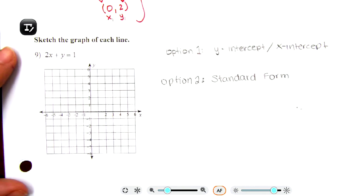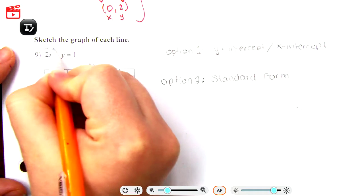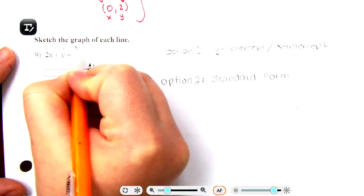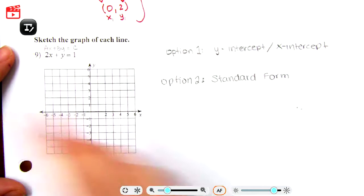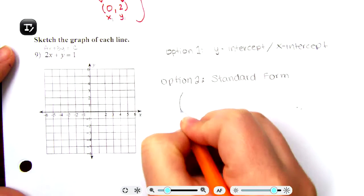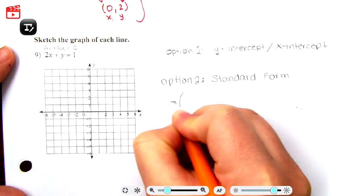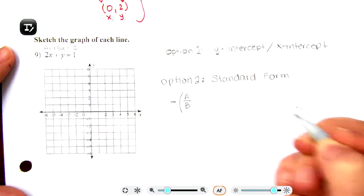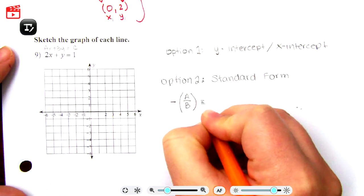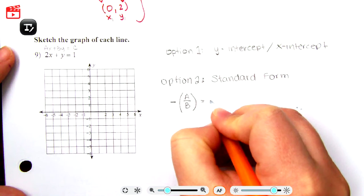We know this is in standard form because we have ax plus by equals c. We don't have any fractions and a is positive. So in order for standard form to graph, the opposite of a over b, or we can multiply by a negative, that is our slope.